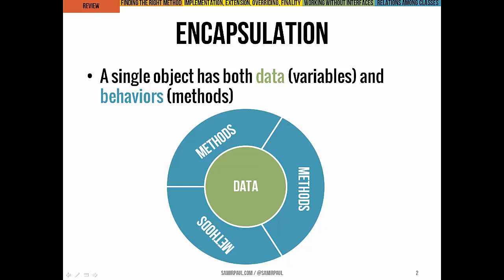Encapsulation is a crucial feature of object-oriented design, and essentially means that a single object has both data and behaviors that are all wrapped together into one entity. That is what an object is, and it's specified by a class as we define it.